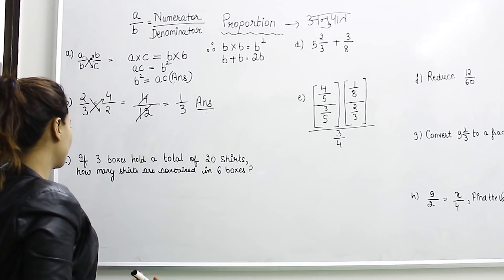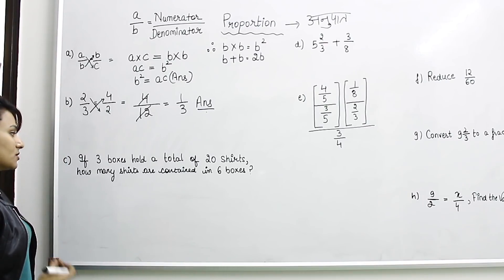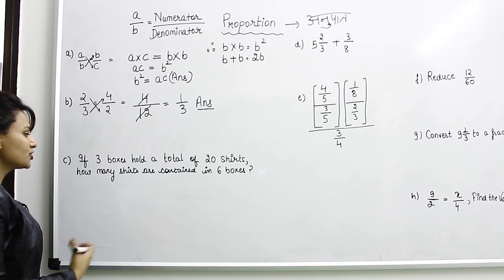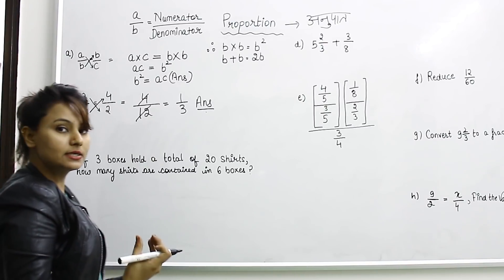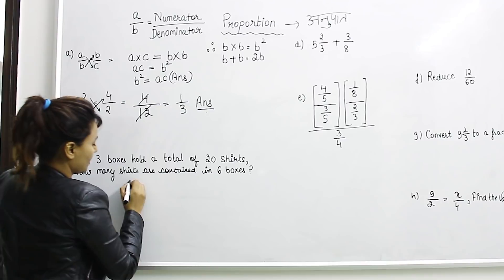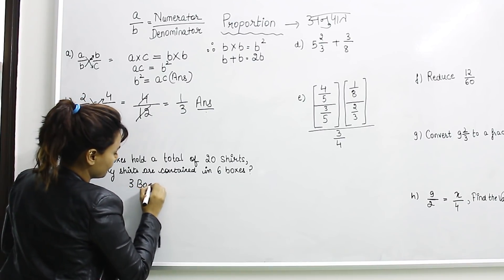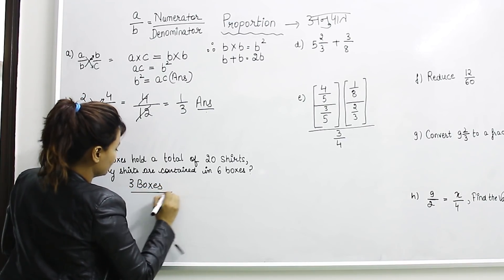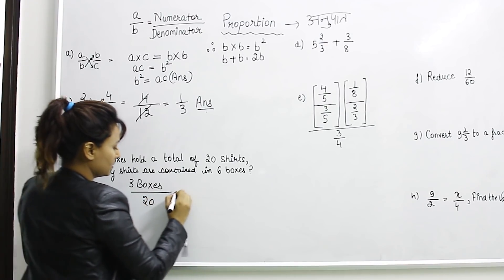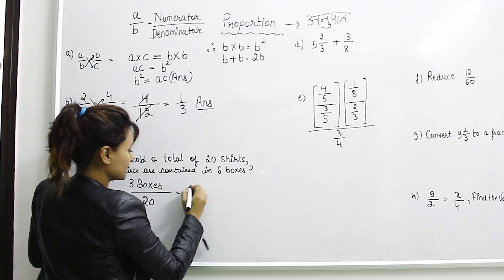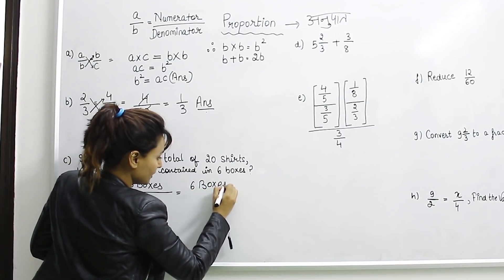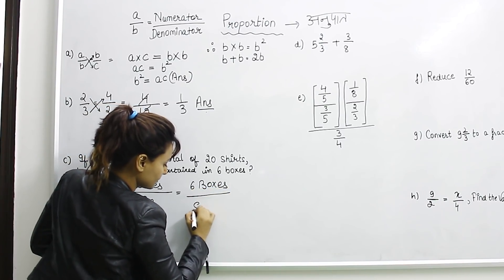Third question: If 3 boxes hold a total of 20 shorts, how many shorts are contained in 6 boxes? So 3 boxes contain 20 shorts, and we need to find how many shorts are in 6 boxes.